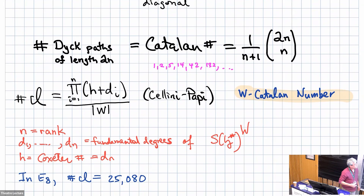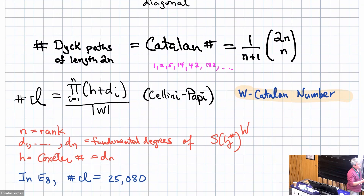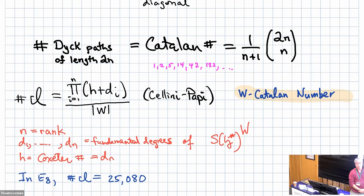The number of Dyck paths is the Catalan number given by that formula. Working in general type, it uses the degrees of the basic invariants — the fundamental degrees, the rank, and the Coxeter number, which is the largest fundamental degree. This was proved by Cellini and Papi: the size of this set is given by that formula. It's called a W-Catalan number. As an example, in E8, there are about 25,000 of these objects.